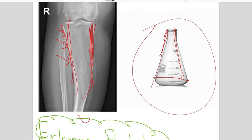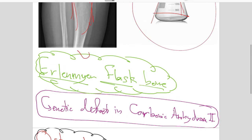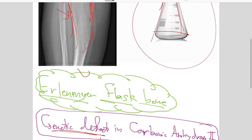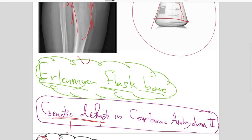Finally, you need to know that the genetic defect that is indicative of osteopetrosis is carbonic anhydrase 2. There should be a genetic defect in the carbonic anhydrase 2 gene, and therefore you will be predisposed to osteopetrosis.